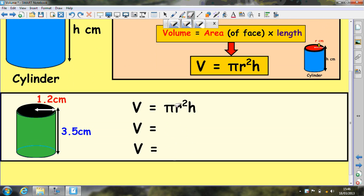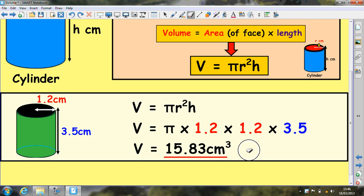We can take pi in our calculator or we can use 3.14 times 1.2 squared or 1.2 times 1.2, it depends which way you want to type it in, either will work. You can use the V2 in your calculator. Times by 3.5 and that comes out as 15.83 cubic centimeters because we're dealing with volume.